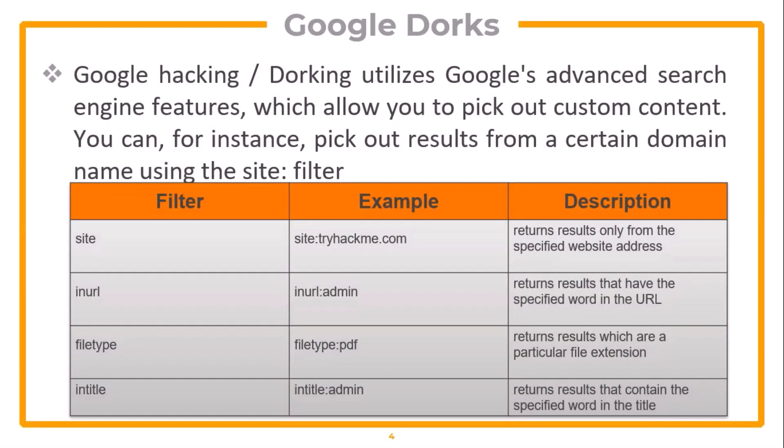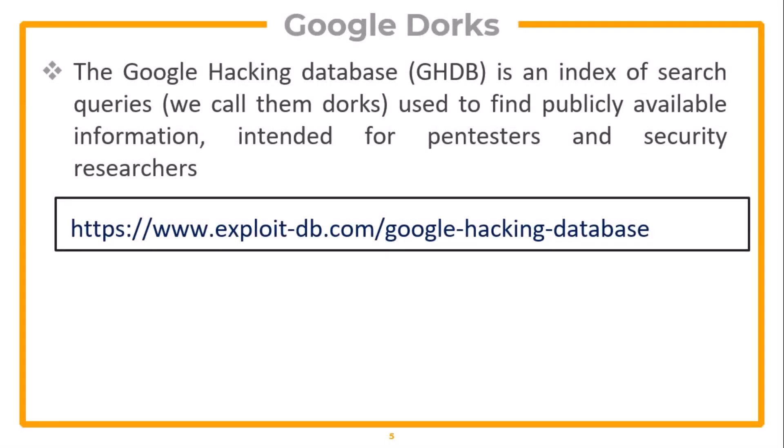Now let's see what Google Dorking is. Google hacking or dorking utilizes Google's advanced search engine features, which allow you to pick up custom content. You can, for instance, pick out results from a certain domain name using the site filter, or use different filters. The Google Hacking Database is an index of search queries used to find publicly accessible information intended for pen testers and security researchers. You can go to the website and get all types of Google dorks, including dorks for vulnerability research and finding vulnerable websites.